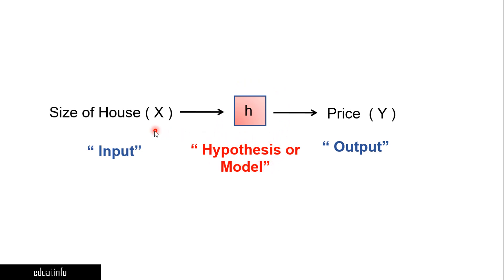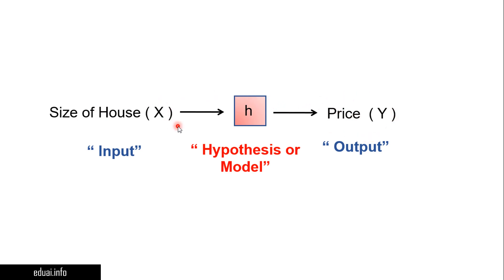We provide input and output to the model, train it, and get the model ready. We then provide future inputs to the model so it can predict future outputs for a given input. This hypothesis is represented by the letter h.